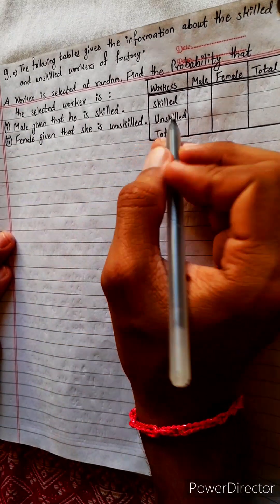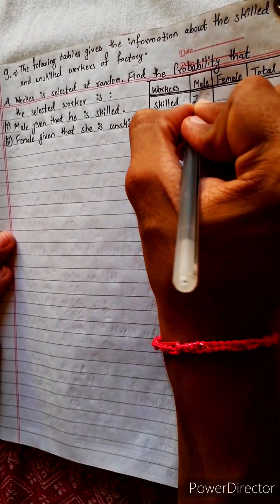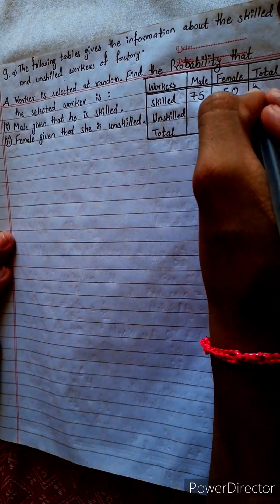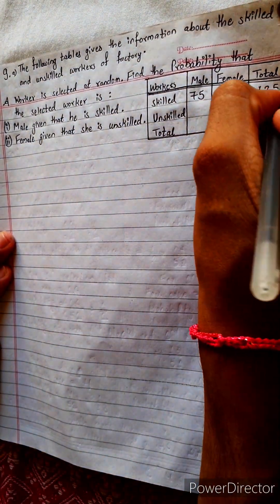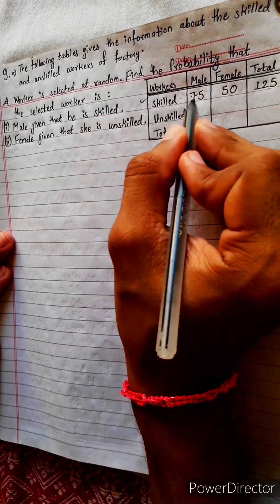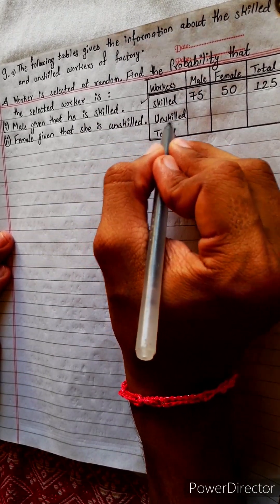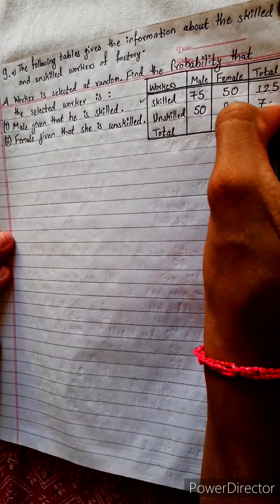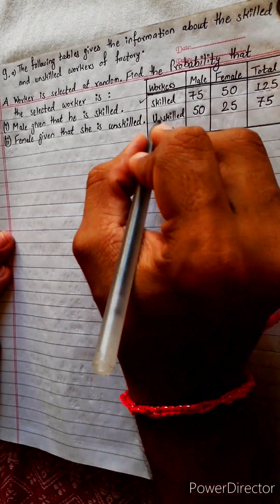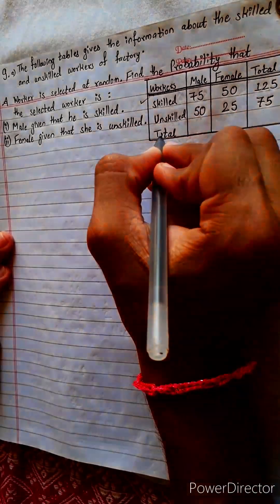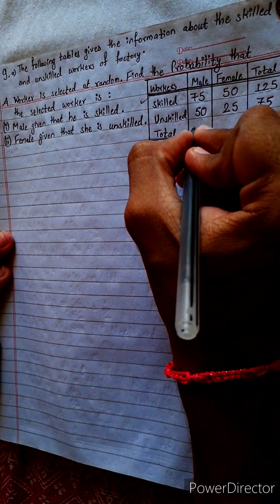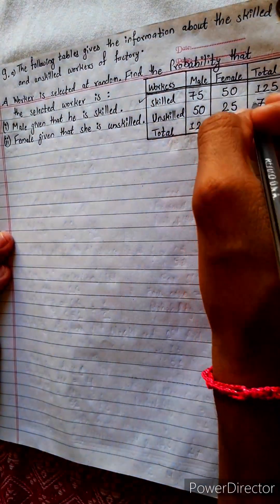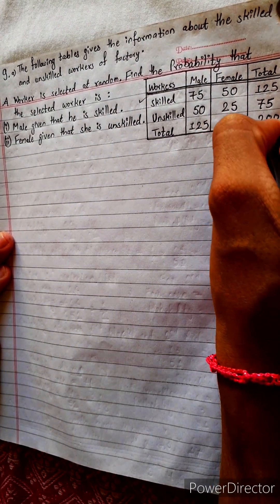The question is: how many people are skilled? Skilled female: 50. Total 125 people are skillful. These 40 people are unskilled, 50 are unskilled, 25 are unskilled — total 75 are unskilled. And in total there are 125 male, 75 female, and 200 people altogether.